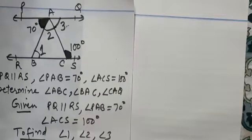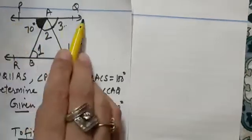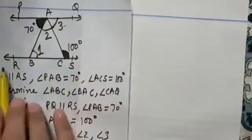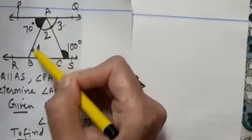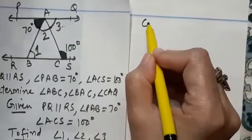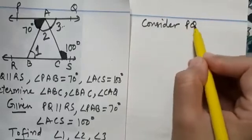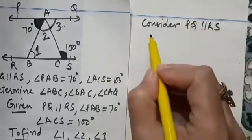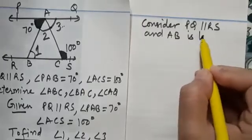Now, observe the figure carefully. We take lines PQ and RS which are parallel and we consider AB as the transversal. So first thing is, we will be writing here, consider PQ parallel to RS and AB is transversal.